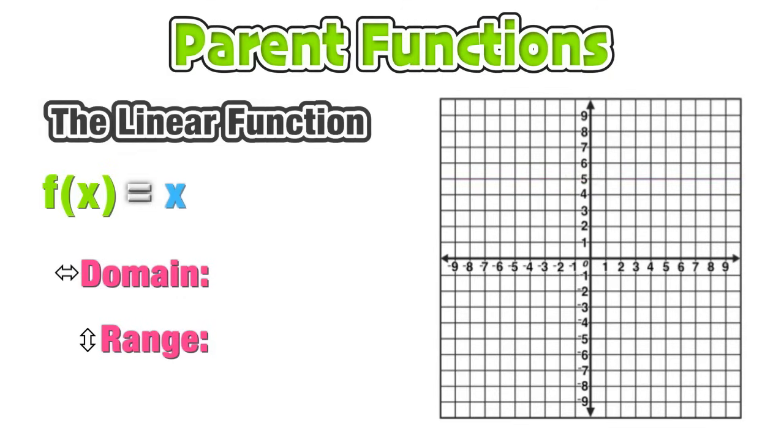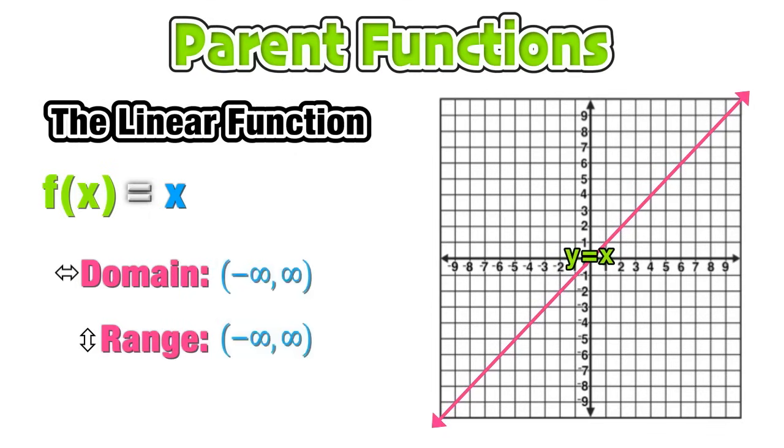The next parent function is the linear function f(x) = x. This is a diagonal line with a slope of 1 and a y-intercept of 0. We can see that the domain and range of the linear function is going to be all values from negative infinity to positive infinity.